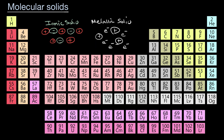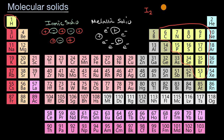Now let's talk about what happens with non-metals. The non-metals, shown in yellow, also include hydrogen. Noble gases are also non-metals, but they're not reactive, so we'll focus on the reactive non-metals. They can form molecules with each other — for example, one iodine can bond to another iodine with covalent bonds, giving a molecule like I₂. You also have things like carbon dioxide, where each carbon bonds to two oxygens. These molecules are formed by covalent bonds between non-metals.